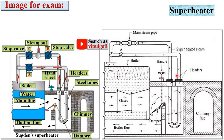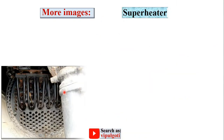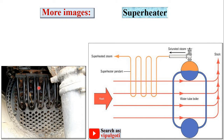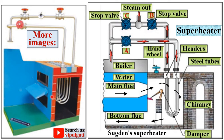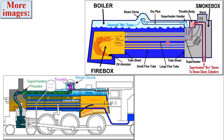Now, an image for examination reference — you can use this image for the examination. Here you can see the superheater tubes, and from this figure you can understand the function of the superheater. This is a model of the superheater showing the tubes and steam headers. From this figure you can understand the location and function of the superheater in the boiler, and here you can also see the superheater in a steam engine.